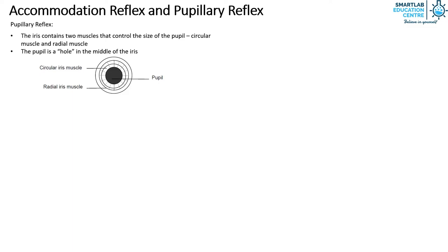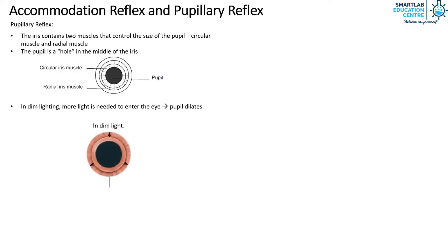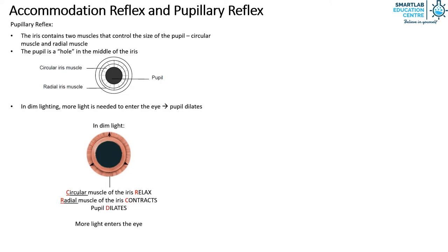In dim lighting, more light is needed to enter the eye, hence the pupil dilates. In order for the pupil to dilate in dim light, the circular muscle of the iris relaxes and the radial muscle of the iris contracts. And the pupil dilates, allowing more light to enter the eye. You can remember this process with the acronym CRRCD.